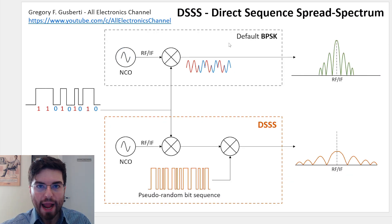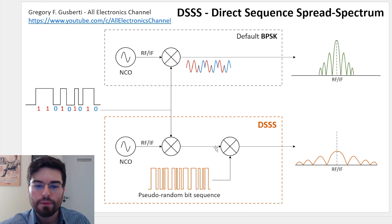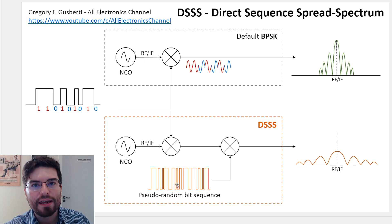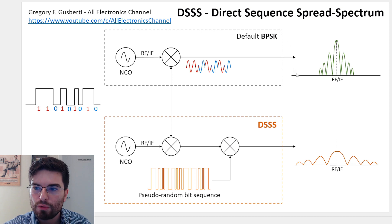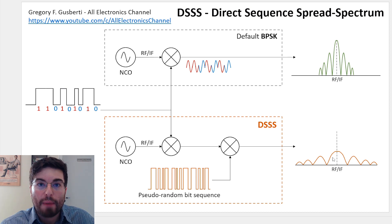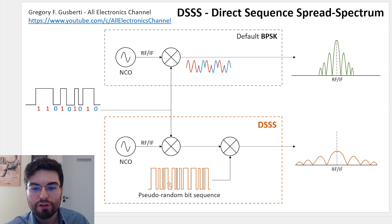To create a spread spectrum BPSK, after the BPSK modulation we modulate the signal again using a pseudorandom bit sequence (PRBS). This PRBS has a chip rate much higher than the data rate, and this is what generates the effect of spreading the spectrum. For the BPSK-only system we have a very narrow spectrum with the standard sinc response, but as the PRBS sequence is much faster than the bit rate, the output signal is spread in spectrum because there are many more phase swaps. The pseudorandom bit sequence is also called the spreading code.